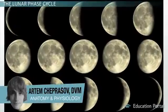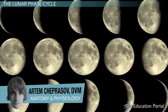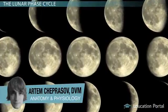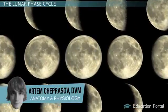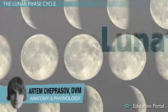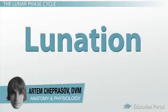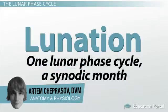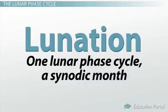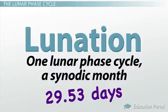As another lesson points out, the lunar cycle was an ancient way of keeping track of time. A lunation, also known as one lunar phase cycle, a synodic month, is completed approximately every 29.53 days.